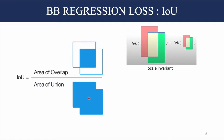The advantage of IOU is that it is scale invariant — it treats the overlap of larger objects and the same overlap in smaller objects equally. That is, there is no bias to scale.